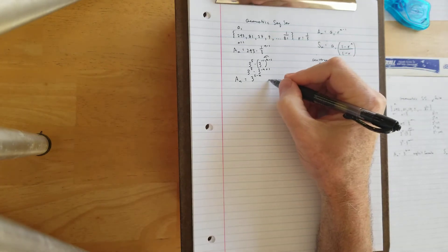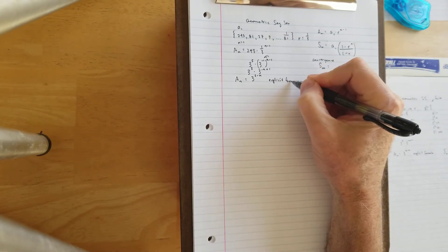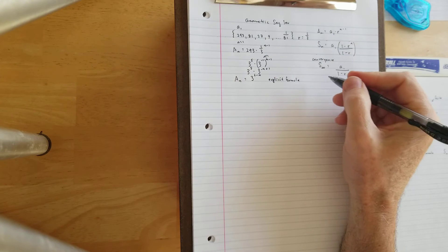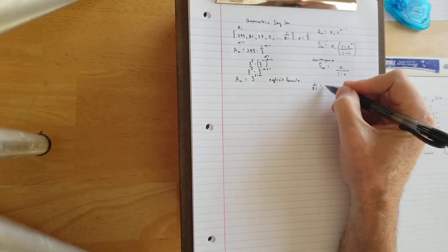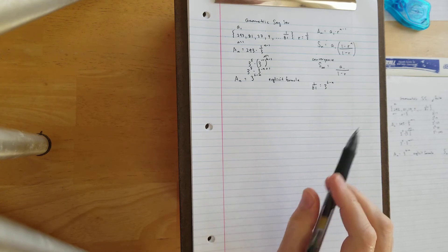Now that we have our explicit geometric formula, we're now going to calculate which term of the sequence 1 over 81 is. So let's do that off to the side. We're going to do 1 over 81 equals 3 to the 6 minus n.